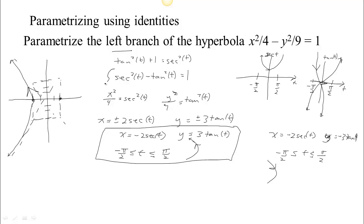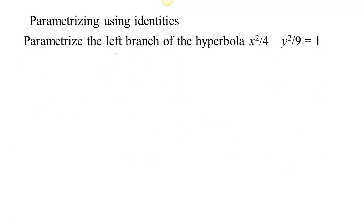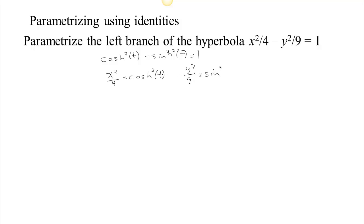This is not the only identity that works. Another option involves hyperbolic functions, which is fitting since we're talking about a hyperbola. The hyperbolic identity is cosh²t − sinh²t = 1. Note that if you did sinh² minus cosh², the answer would be −1. By comparison, if we choose x squared over 4 to equal cosh squared and y squared over 9 to equal sinh squared, that gives a parameterization: x equals plus or minus 2 cosh t, and y equals plus or minus 3 sinh t.